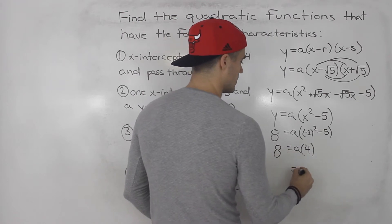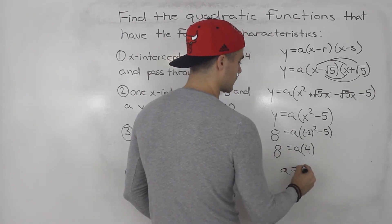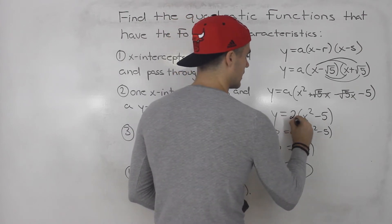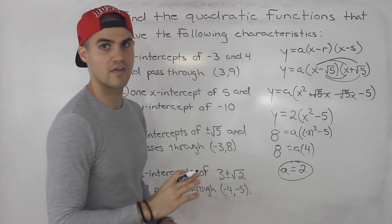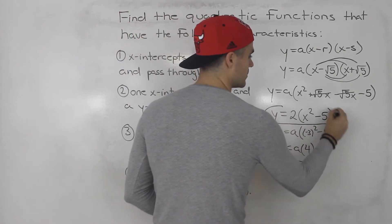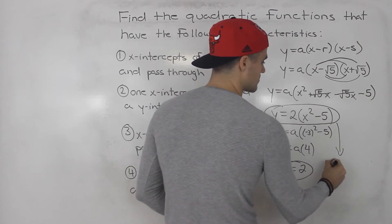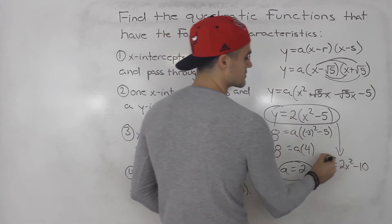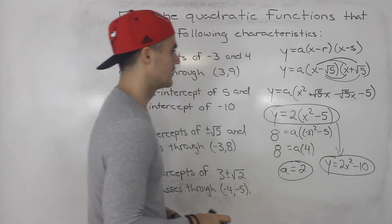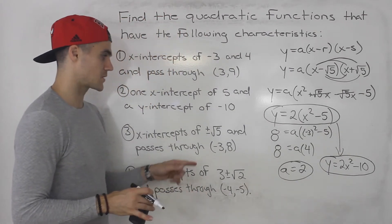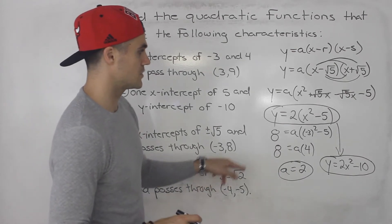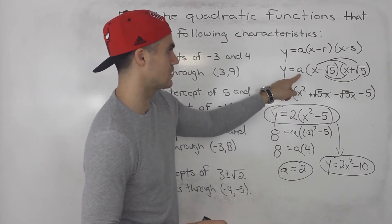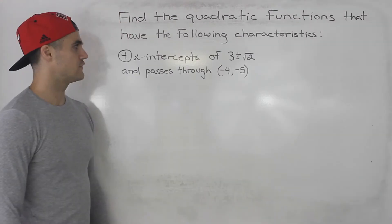Plugging in (negative three, eight) to solve for a: eight equals a times ((-3)² - 5) = a times (9 - 5) = 4a. So a equals two. We plug the two into the simplified quadratic without radicals: y = 2(x² - 5). You can expand it to 2x² - 10, but the factored form is acceptable. Always make sure the final answer has no radicals.